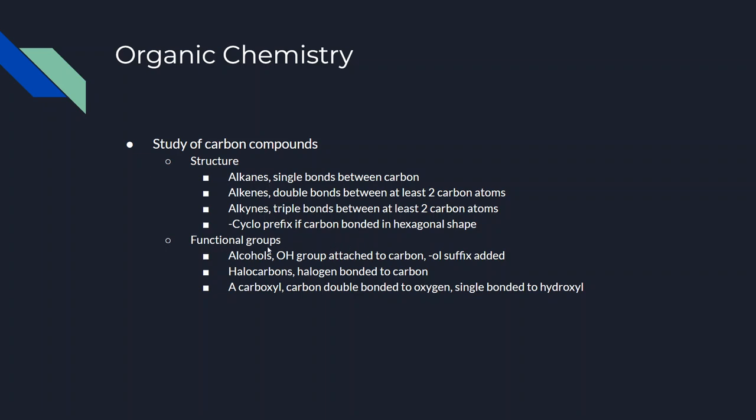Then some stuff about the functional groups. There's alcohols where there's an OH group attached to carbon and an OL suffix is added to the end of whatever the compound is called. There's halocarbons where there's a halogen bonded to the carbon, and carboxyl where carbon is double bonded to oxygen and single bonded to hydroxyl.